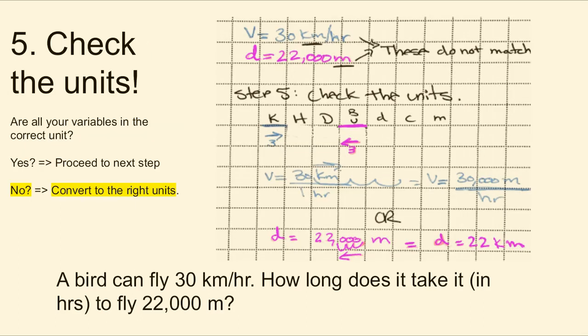Step five, check the units. Do all your variables have the correct units? If so, move to the next step. If not, convert to the right units first. As we look at this problem, we notice that the velocity is in kilometers per hour, but our distance is in meters, and kilometers and meters do not match. 99% of time, you should convert to meters, but since the question asks for time and hours, it's okay to convert from meters to kilometers. I've shown both methods here as a refresher. If you are going from kilometers to the base unit of meters, you move the decimal three places to the right. And if you are converting from the base unit of meters to kilometers, you move the decimal three places to the left.